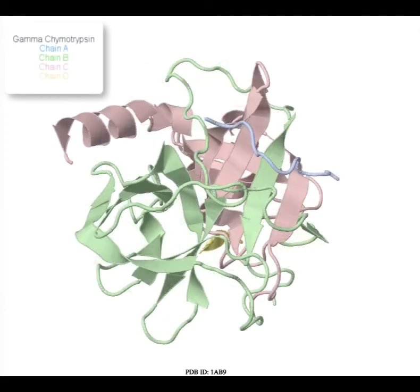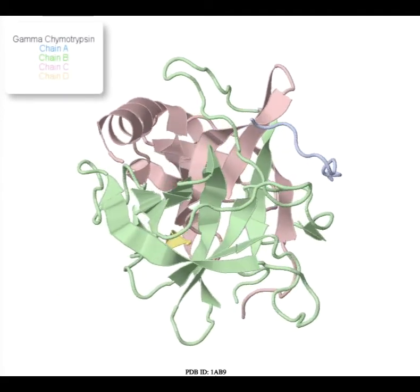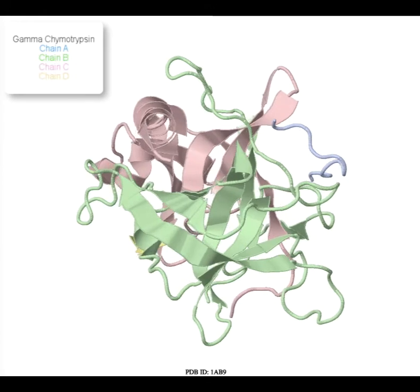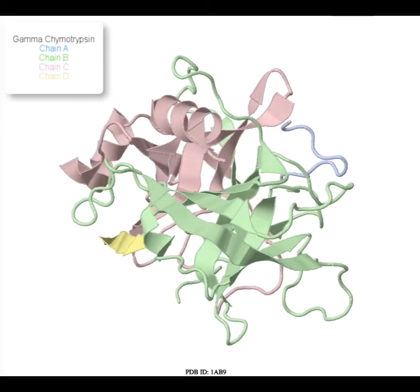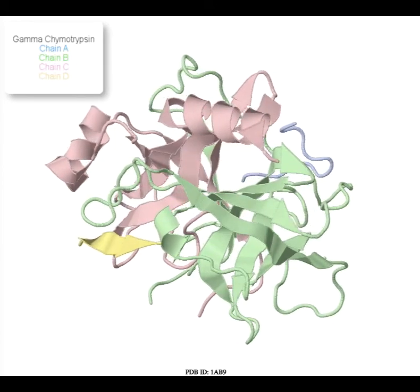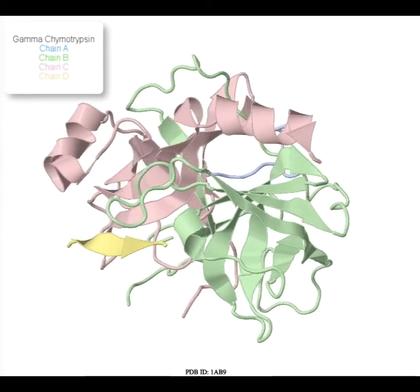The bovine gamma-chymotrypsin protein will serve as an example. Chymotrypsin is secreted by the pancreas and catalyzes the breakdown of proteins in digestion that occurs in the intestine.